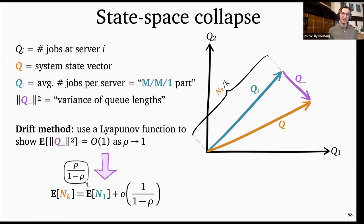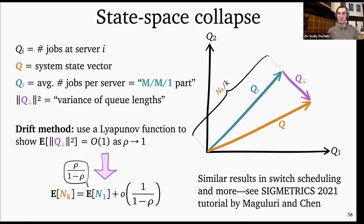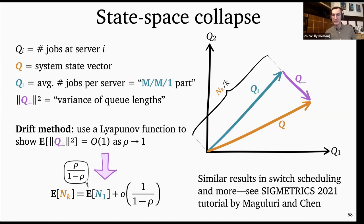This method has been applied to many more systems than just JSQ. In particular, it has had lots of use in various types of switch scheduling — where at every moment in time you have to make routing decisions, matching some number of input messages to some number of output queues. This is a much more complicated type of problem, but the drift method and state space collapse method have seen great success in switch scheduling and more. There's another Sigmetrics tutorial this year by Maguluri and Chen — you should check that out if you want to hear more about the drift method.